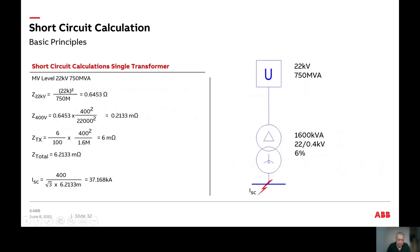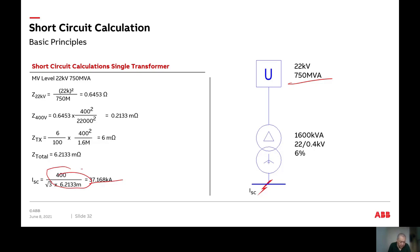For a simple calculation example: with my utility and a 1.6 MVA transformer, 22 kV to 400 V, 6% short circuit voltage, using the formulas given, I can find the total impedance and calculate the short circuit current. Using Ohm's law, the result is 37.2 kA — this doesn't change.